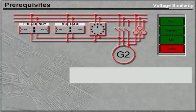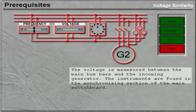The voltage is read between the main bus bars and the incoming generator. The instruments are found in the synchronizing section of the main switchboard.